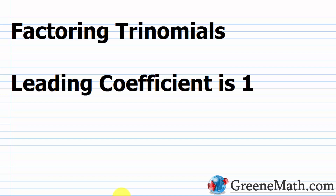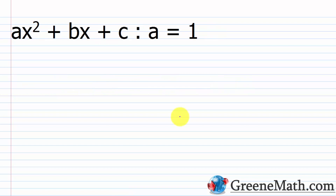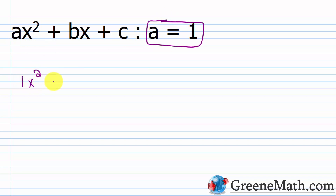In this lesson, we want to review factoring trinomials when the leading coefficient is 1. Anybody that's ever taken an algebra course will have run across the topic where they deal with factoring trinomials into the product of two binomials — it's very common. The easier scenario occurs when the leading coefficient is 1. So if we look at a trinomial, which is a three-term polynomial, like ax² + bx + c, if we let a equal 1, I have a coefficient of 1 on the leading term. So I could just write it as x² + bx + c. This is the easiest case scenario.